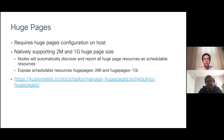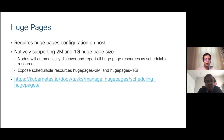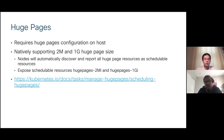Huge pages is the second aspect. It requires huge page configuration on the host and natively supports both 2 MB and 1 GB huge pages. The nodes are automatically discovered — this is natively available in Kubernetes. As long as you have 2 MB and 1 GB huge pages configured on the host, they will automatically be discovered.